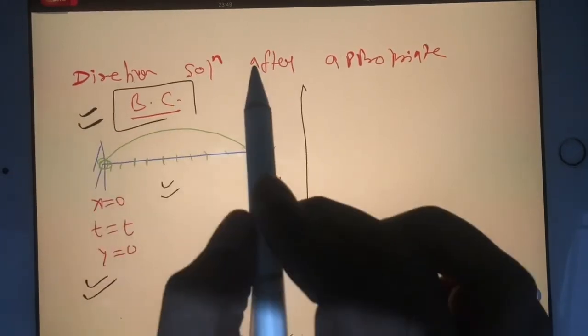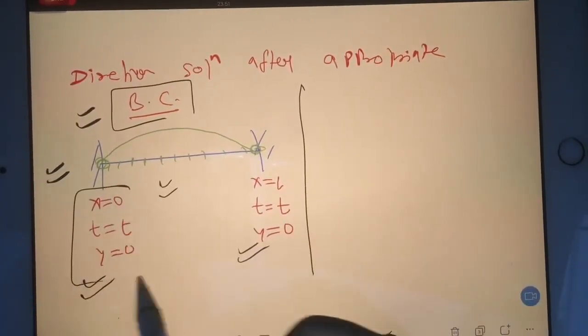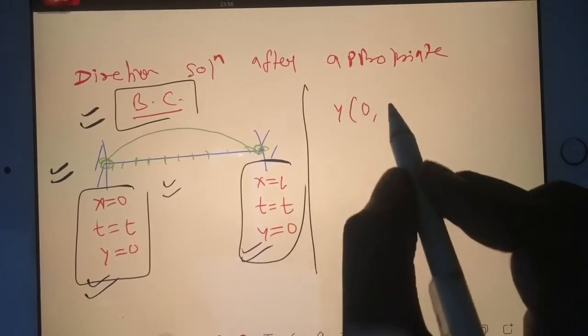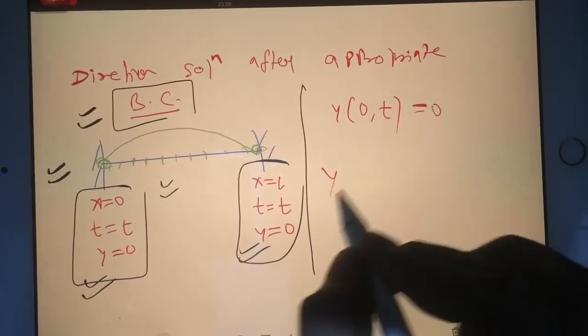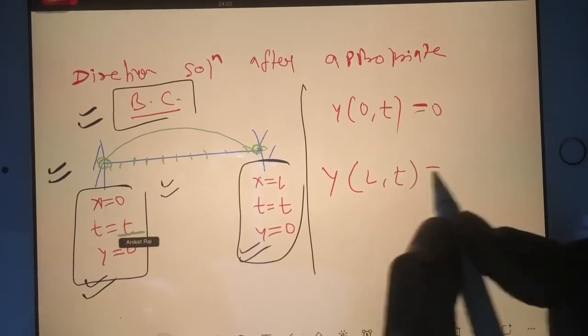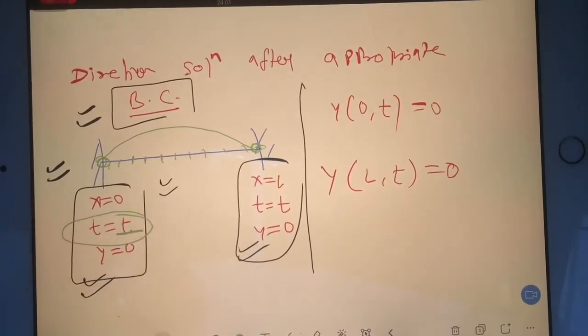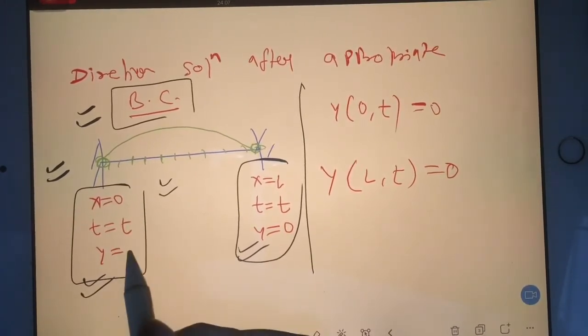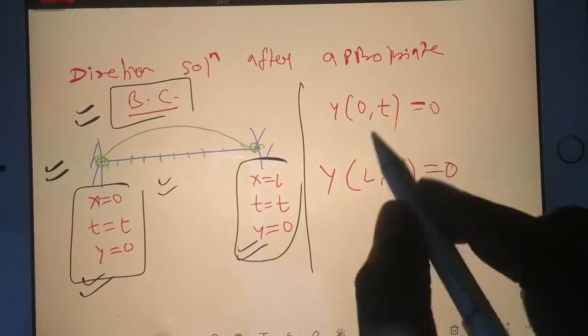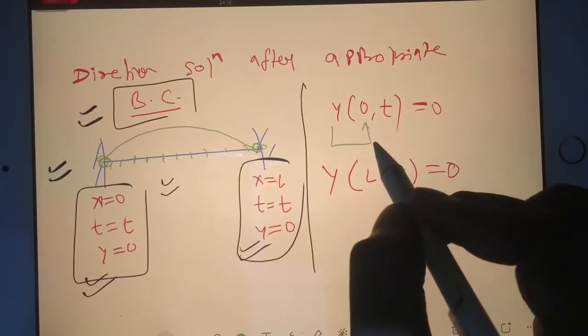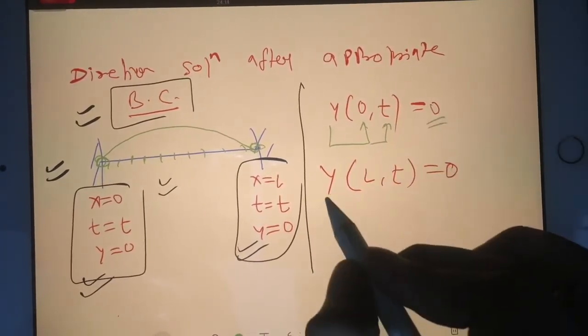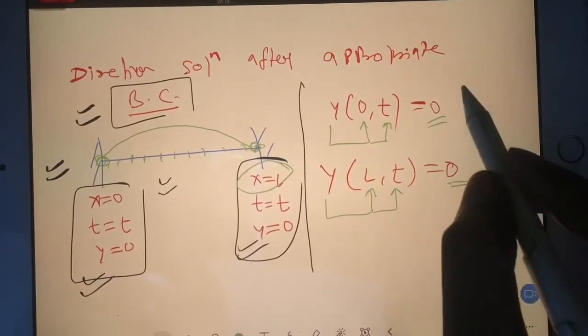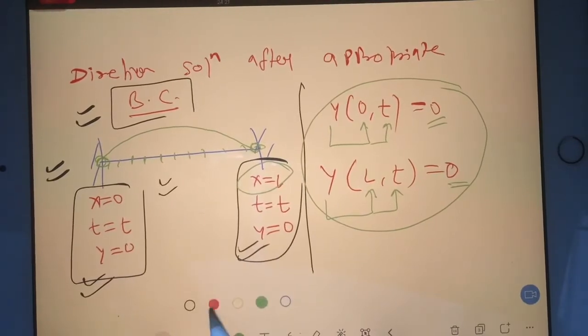I'll give you a list of boundary conditions. In this case, the boundary condition you will write like this: y(0,t) equals zero and y(L,t) equals zero at t equals any time. This means y at x equals zero and any time t is zero; y at x equals L and any time t is zero. These two became your boundary conditions for vibration of a string.